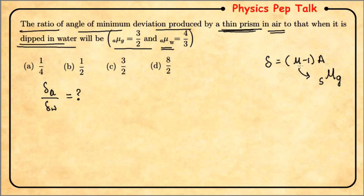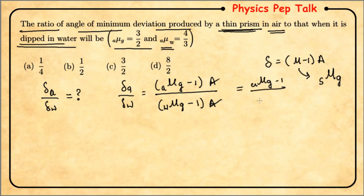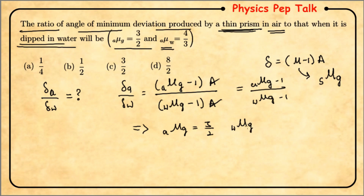So δ_a = (μ_ga - 1) × A and δ_w = (μ_gw - 1) × A. The ratio δ_a / δ_w = (μ_ga - 1) / (μ_gw - 1). We know μ_ga = 3/2. We need to find μ_gw. Using: μ_gw = μ_ga / μ_wa = (3/2) / (4/3) = (3/2) × (3/4) = 9/8.